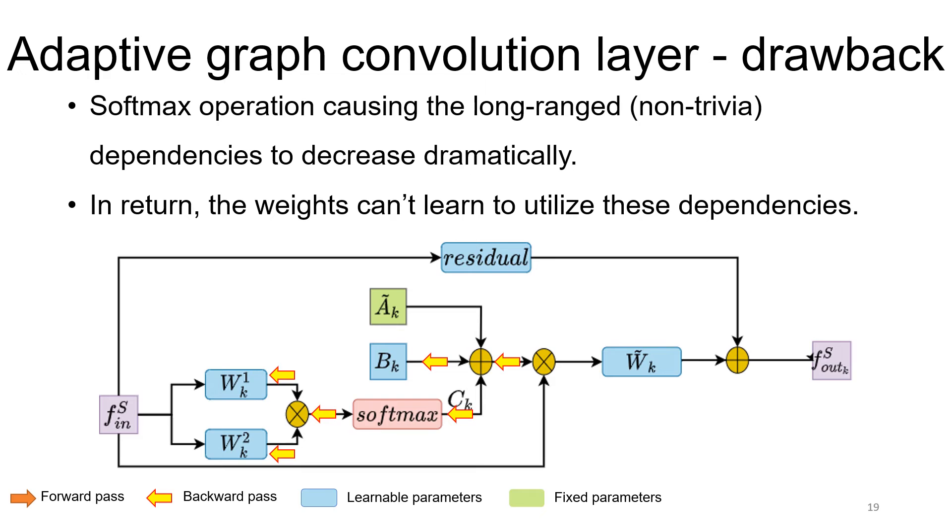In our case, the long-range dependencies are crucial, as the hand is a small structure where each vertex is correlated with all other vertices. Therefore, the concept of long- and short-range dependencies is not applicable here.